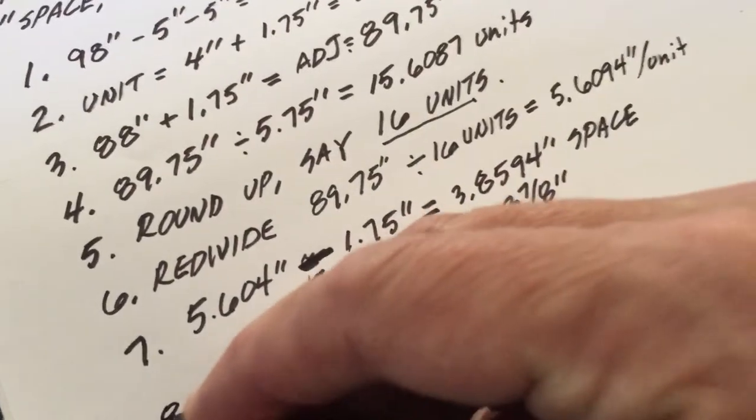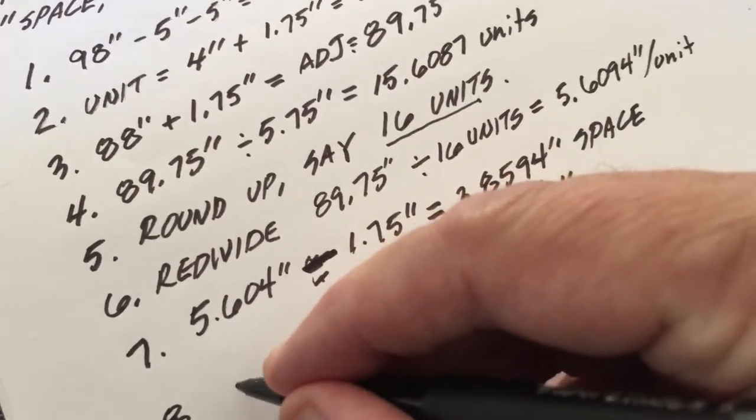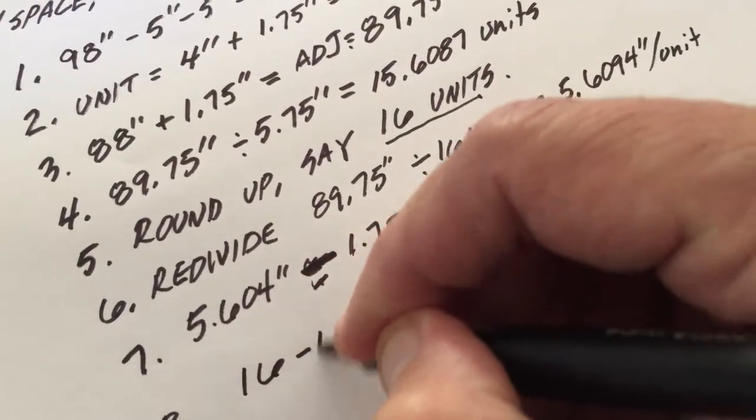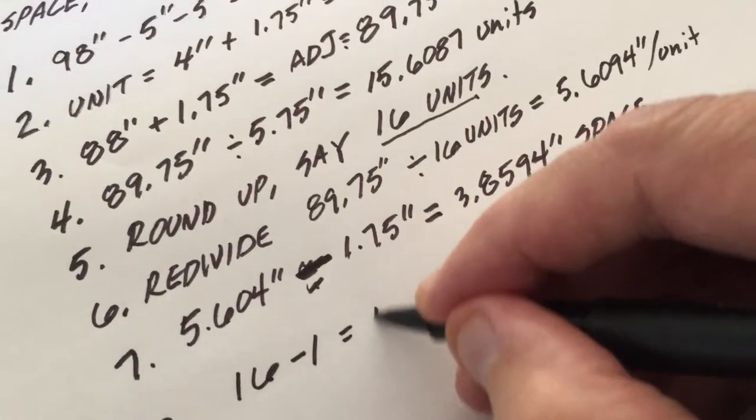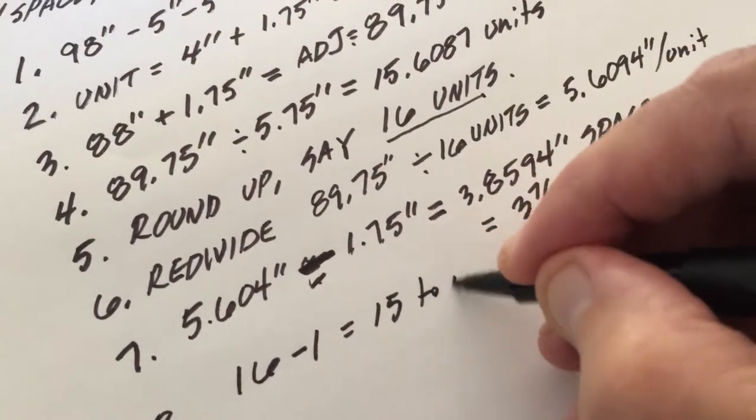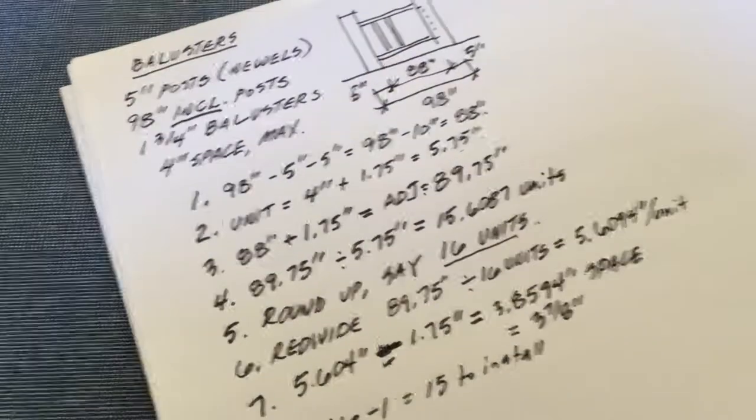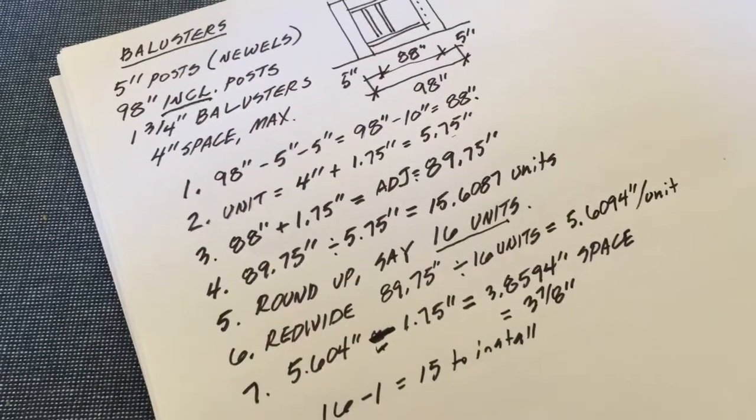The final step is to remember to subtract that ghost baluster that we added in. So we take our 16 units minus one for the ghost means we have 15 to install. And that is your baluster problem math.